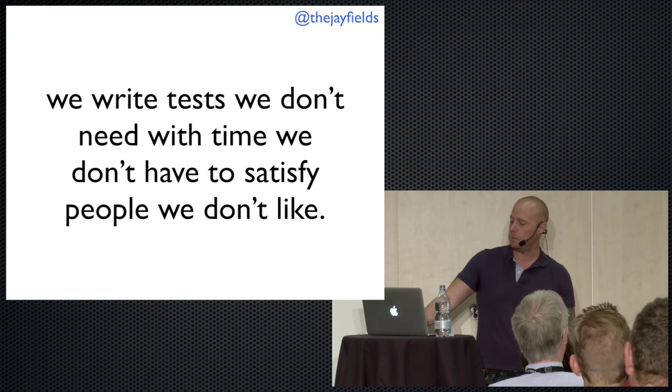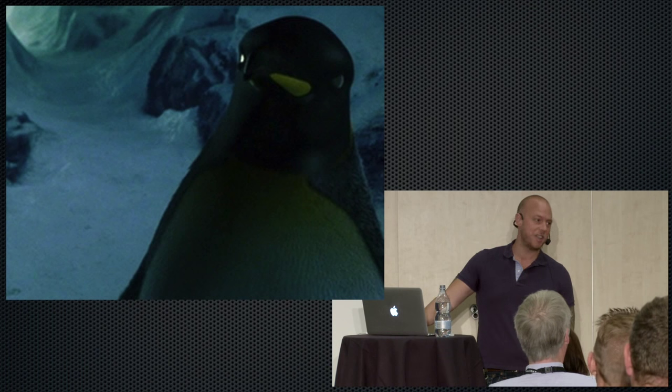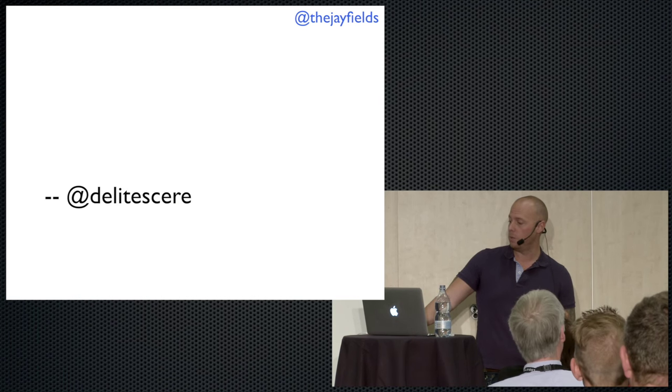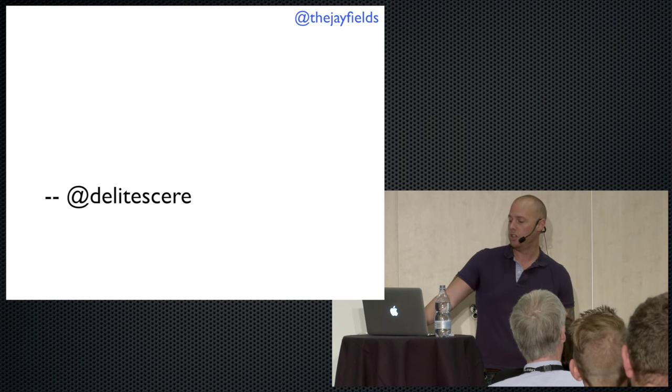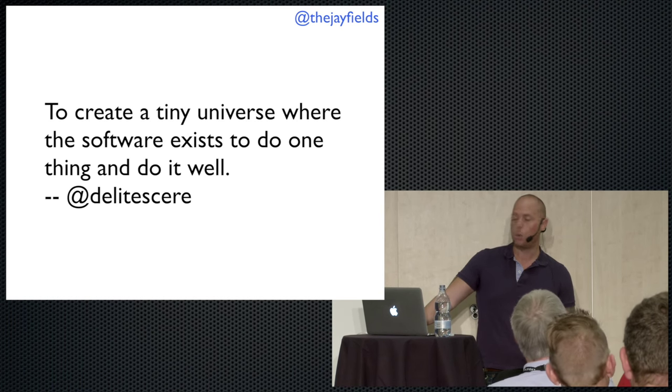We write tests we don't need with time we don't have to satisfy people we don't like. What if we took a step back? I do believe there's a better way to write really nice tests. It's time to look at unit testing with a fresh point of view. Josh Graham succinctly provided what I believe is the best high-level goal: to create a tiny universe where software exists to do one thing and do it well. One thing and universe are the most important pieces. I want my test to focus on a single thing — a single responsibility. I don't need four customers if I'm testing one customer.